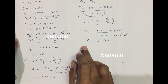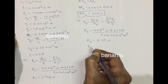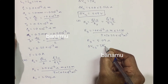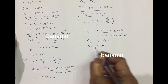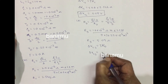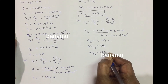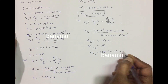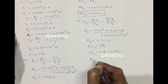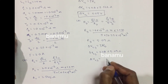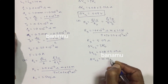The potential difference between points 2 and 3 is ΔV₂₃ = I × RD = 2 A × 5.09 Ω = 10.18 V. This is the potential difference between points 2 and 3.